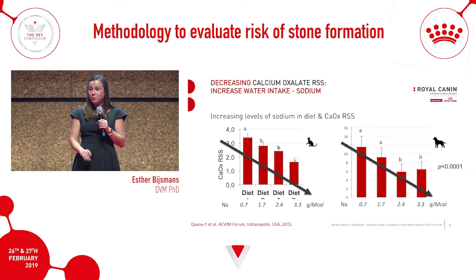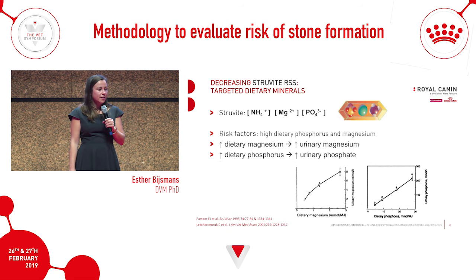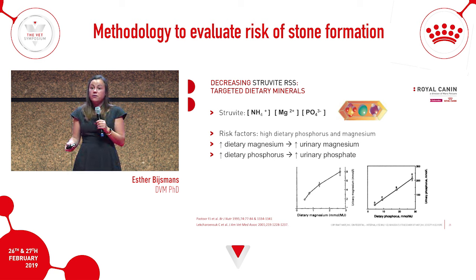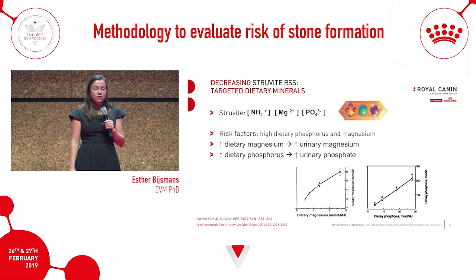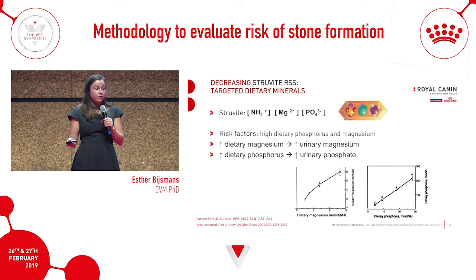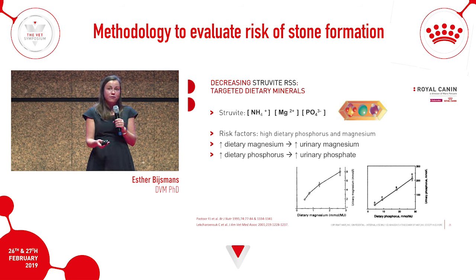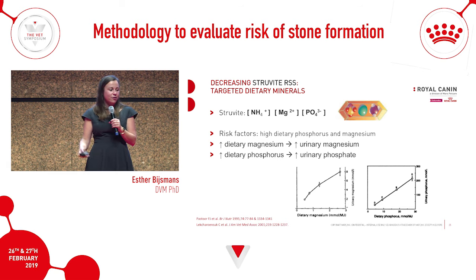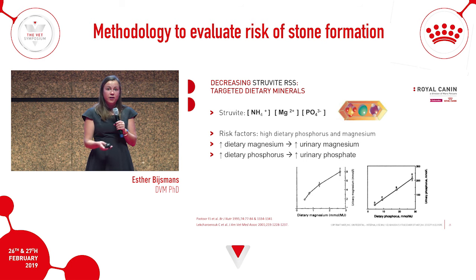Decreasing RSS using targeted precursors of crystals: for struvite it's relatively simple. Struvite is composed of ammonium, magnesium, and phosphorus. Studies over the years found that risk factors for struvite development include urinary tract infections and increased pH, but also higher dietary phosphorus and higher dietary magnesium, which lead to higher urinary excretion of those minerals and increase the risk of struvite.